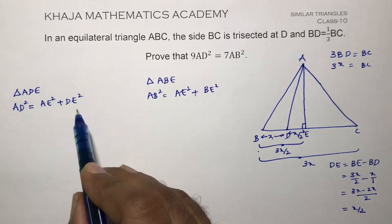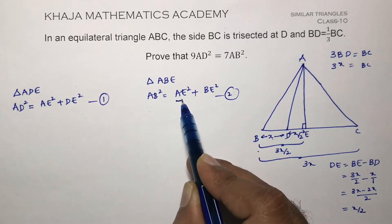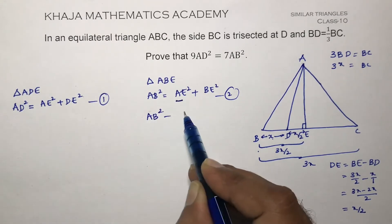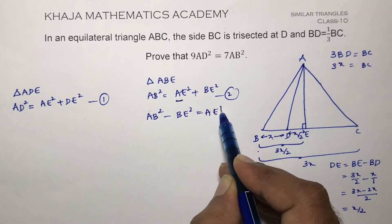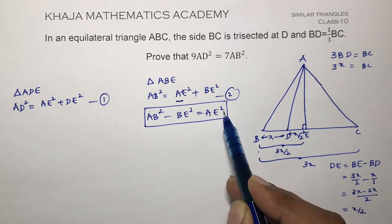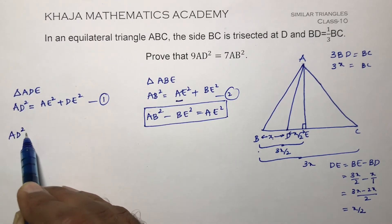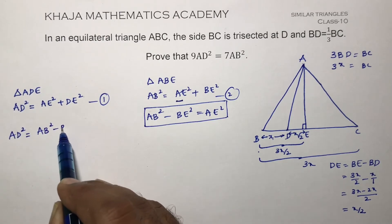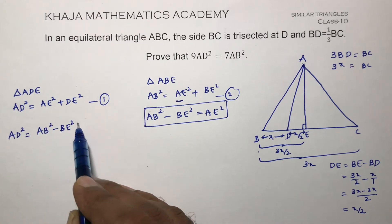In these two equations, we need to find the value of AE and substitute it. From triangle ABE, AB² equals AE² plus BE², so AE² equals AB² minus BE². Substituting this value of AE² into equation 1, AD² equals AB² minus BE² plus DE².